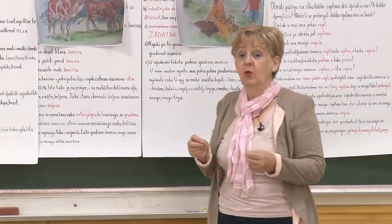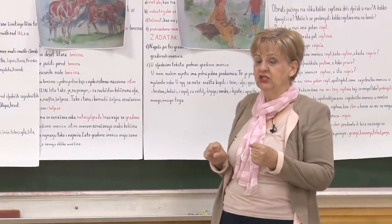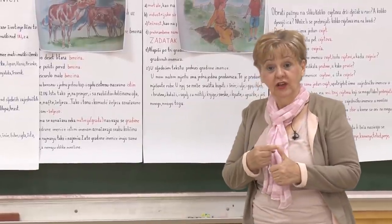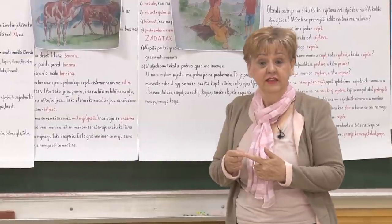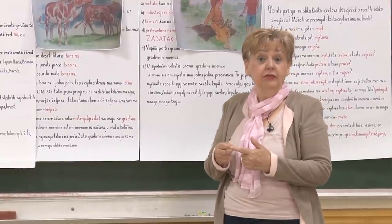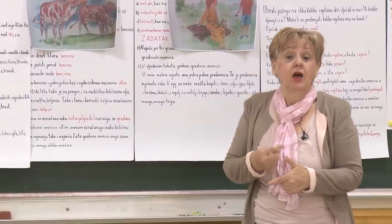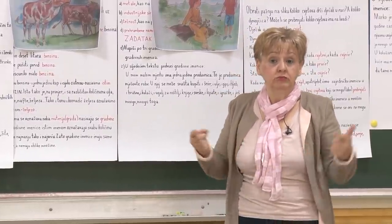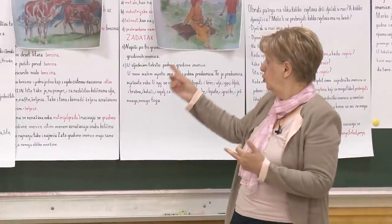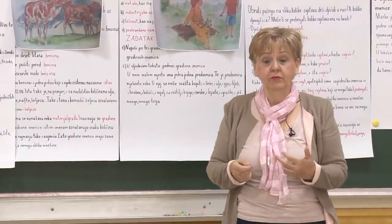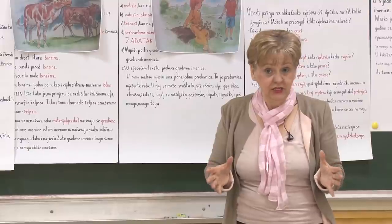Ako je ženski rod, onda je ta. Ako je muški, onda je taj. Taj čovjek, taj mangup, taj dječak - ta djevojčica, ta žena, ta kuća, ta mama. I to za srednji rod - to tele, to pile, to mače, to dijete - srednji rod. Na slici vidimo kravu, bika i tele. Za kravu ćemo reći ta krava, taj bik i to tele.